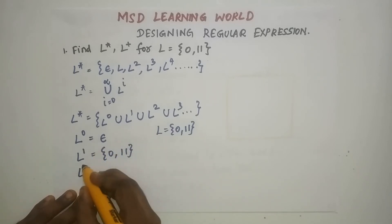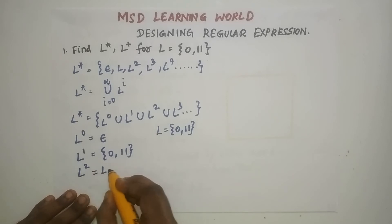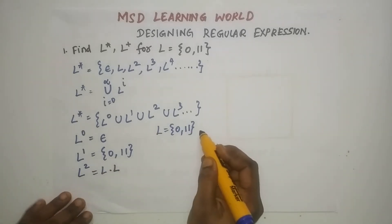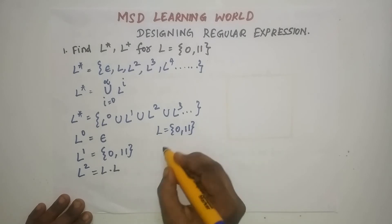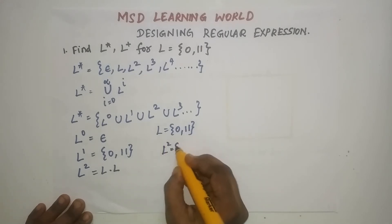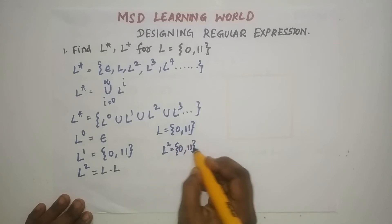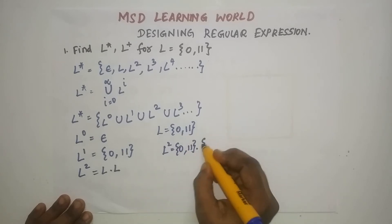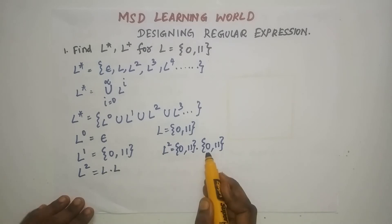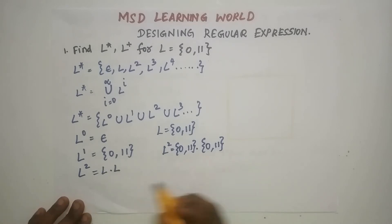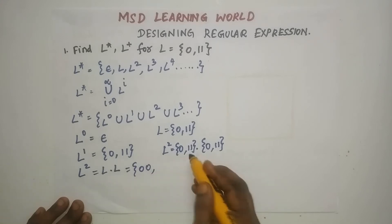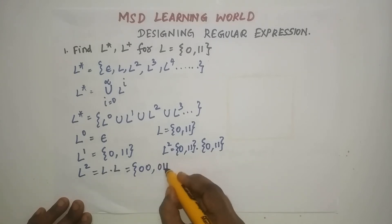What is L²? It is nothing but L concatenated with L. So L² = {0, 11} concatenated with {0, 11}, which gives: 0 concatenated with 0, 0 concatenated with 11 — that is, {00, 011, 110, 1111}.